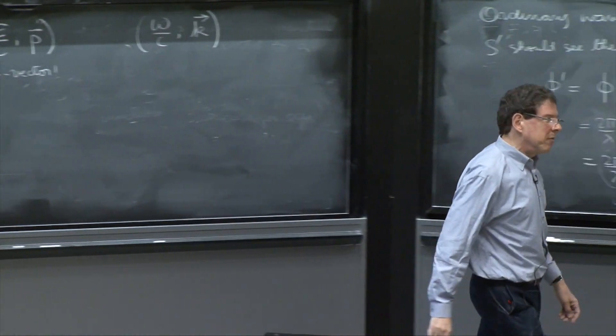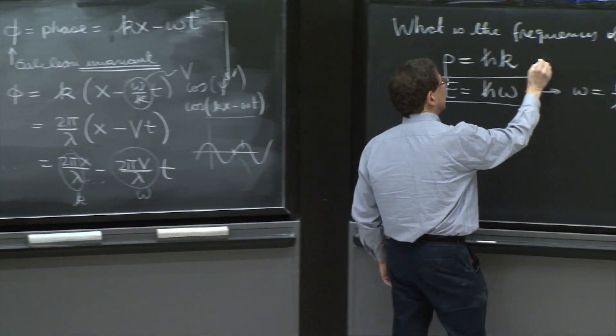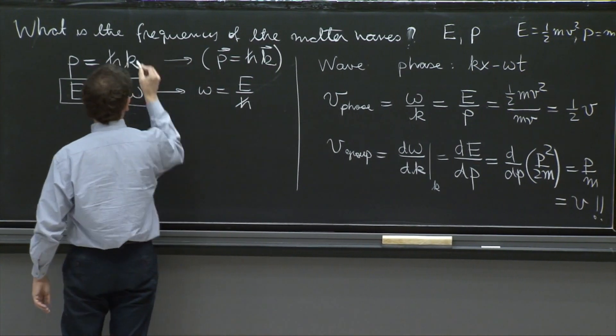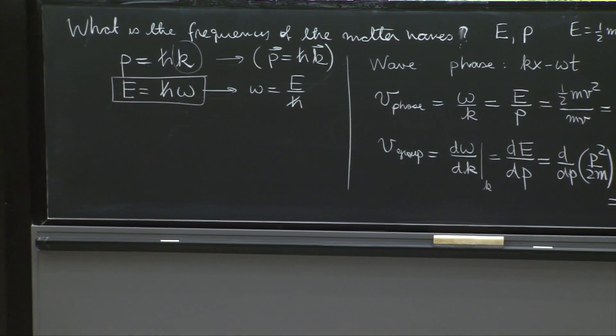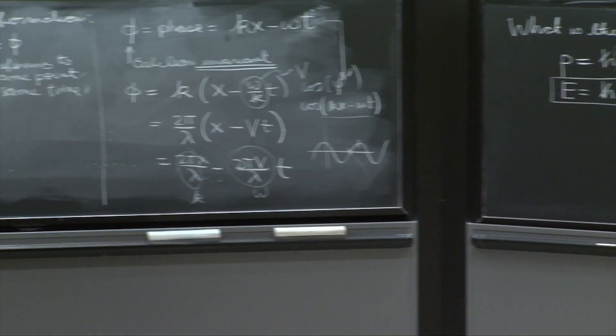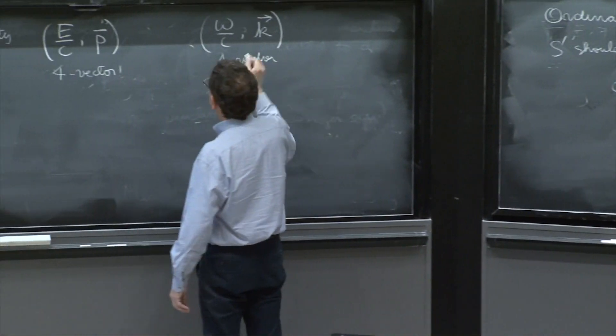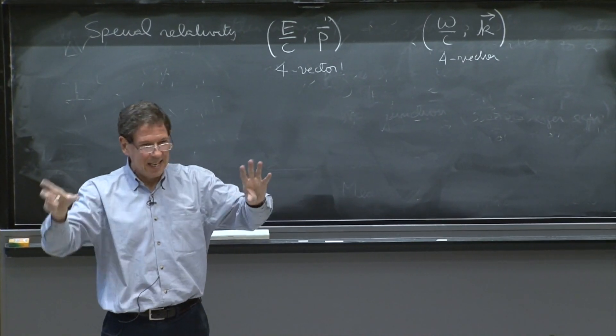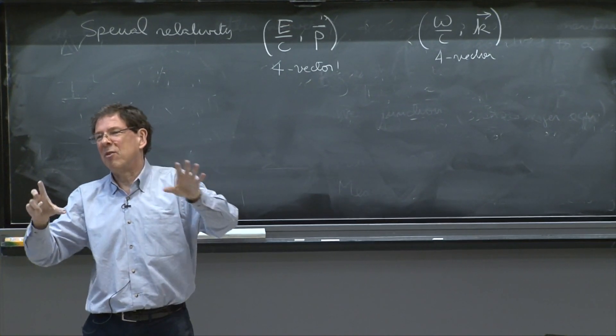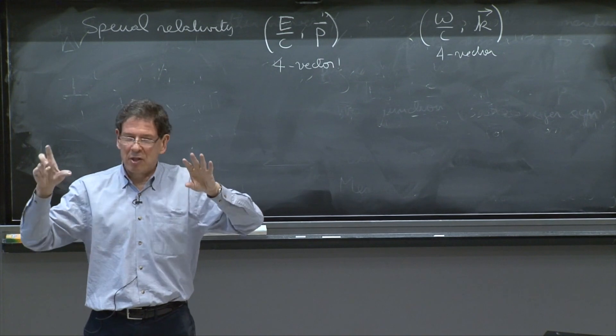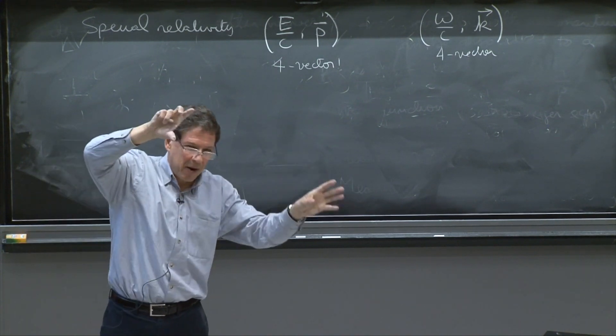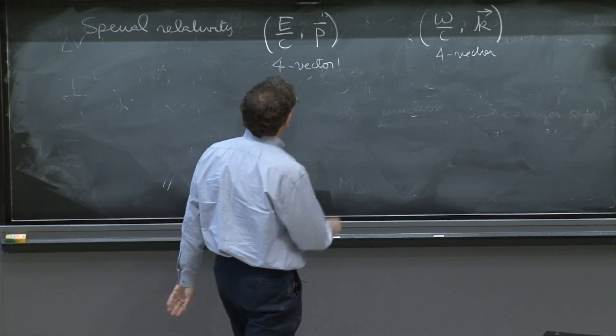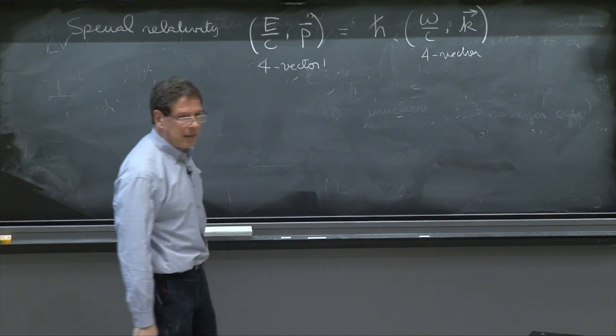You see, in all the equations we've written, de Broglie in three dimensions or more is really p vector equal h bar k vector. And k is usually used for the magnitude of this k vector. So this is also four vector in special relativity. And therefore, vectors are things that transform nicely. So it makes sense to say that one four vector is equal to another four vector. Because if it's true in one reference frame, it will be true in every reference frame. So it's almost irresistible to make them equal. And de Broglie, in some sense, said this is equal to h bar. And that's de Broglie.